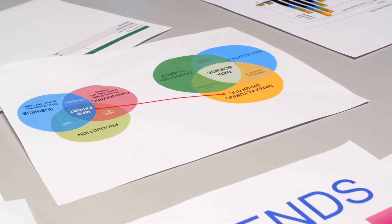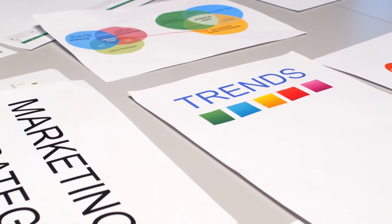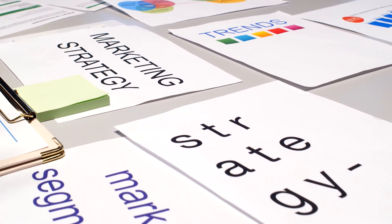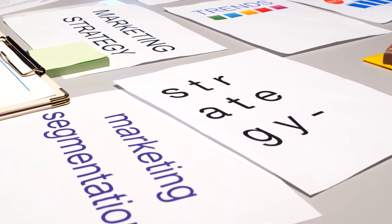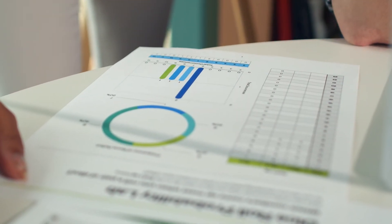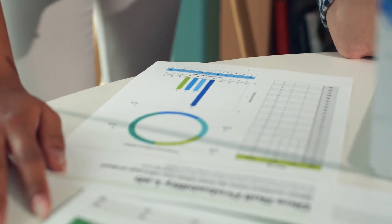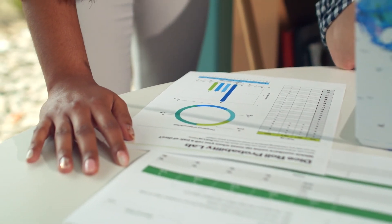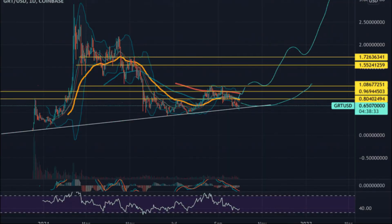If you are looking to invest in digital cryptocurrencies and want good returns on your investments — The Graph Price Prediction 2021: According to our deep technical analysis on past price data of GRT, in 2021 the price of The Graph is predicted to reach a minimum level of $0.80. The GRT price can reach a maximum level of $0.86 with an average trading price of $0.84.